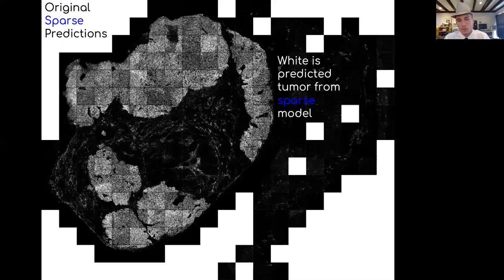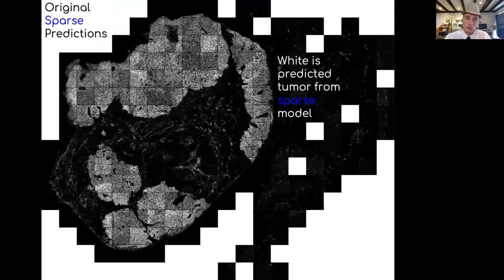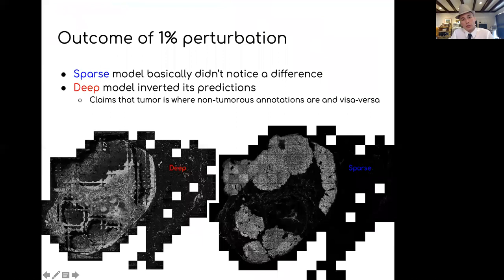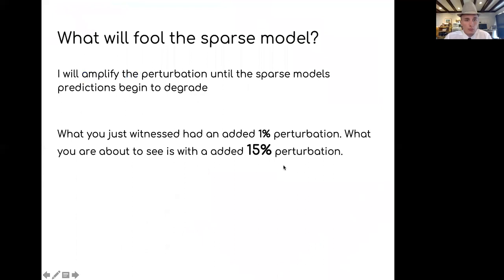Here's the sparse model's predictions. This is the sparse model's original predictions. Here's after 1% perturbation. Basically no change. There was almost no difference in its actual meaningful predictions after a tiny change which doesn't even make sense to a human. That's a really good result. Again, the deep model completely failed, sparse model didn't really notice the difference.